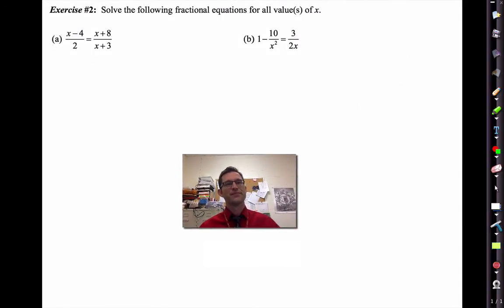Exercise two says solve the following fractional equations for all values of x. With fractional equations, ultimately what you're almost always trying to do is get rid of the fractions. There's two major techniques: either cross-multiplying or multiplying both sides by a quantity that will cancel all denominators. The purist would say those two actually are the same technique, and the purist would be right.